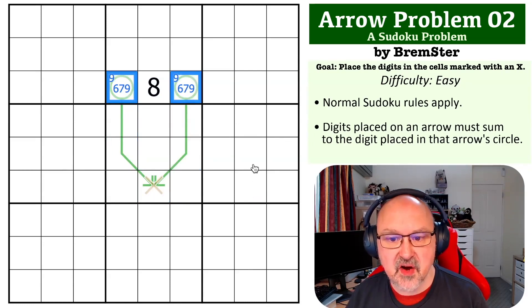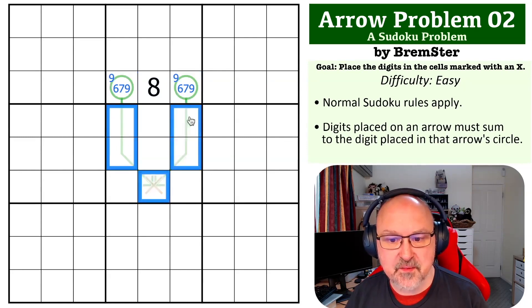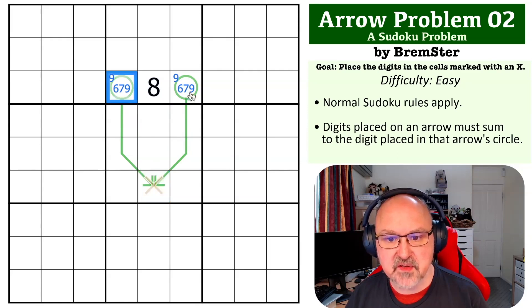Now, if I make this 9 and 6, they are 15, which would mean these would have to be 1, 2, 3, 4, 5 without a repeat. So that doesn't work.